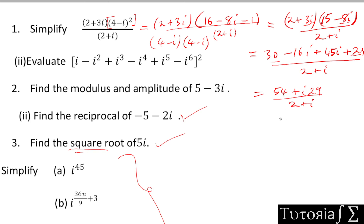Since we have a complex number in the denominator, we multiply by the conjugate of the denominator. The conjugate of (2 + i) is (2 - i), because the sign of the imaginary part changes — if it's positive it becomes negative, and vice versa. We multiply both numerator and denominator by (2 - i).